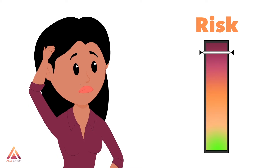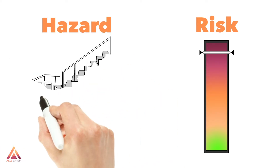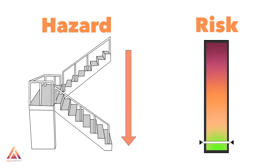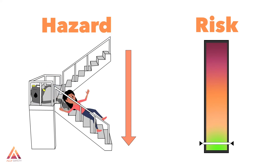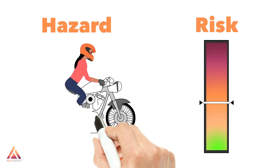Let's go through some examples. Stairs are a hazard because there's always the potential you could fall down them — it's as simple as gravity. That being said, stairs aren't normally considered dangerous, but certain conditions can increase the chance that we fall, which increases the chances of getting hurt, which increases the risk.